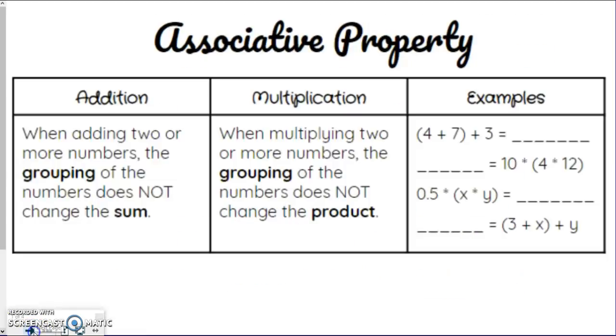So let's go ahead on to the associative property. I know that's a little tricky to say, but it's called associative property. And again, this is only used with addition or multiplication. You cannot do this with subtraction or division. It's kind of similar to the last one, but what's different here is it's saying, when adding two or more numbers, the grouping of the numbers does not change the sum. And then same thing with multiplying.